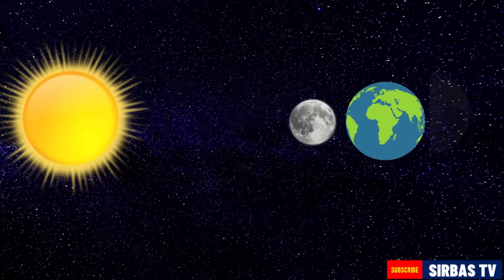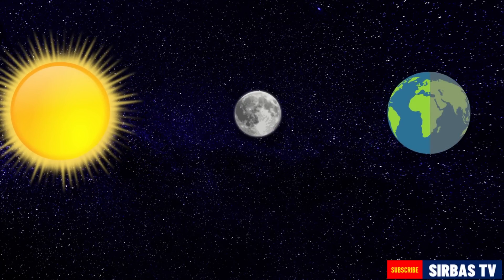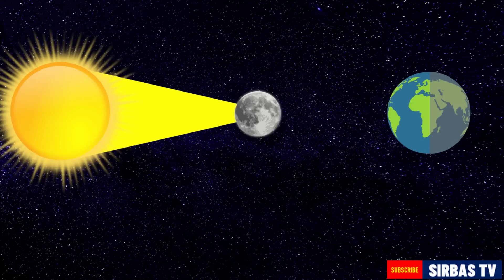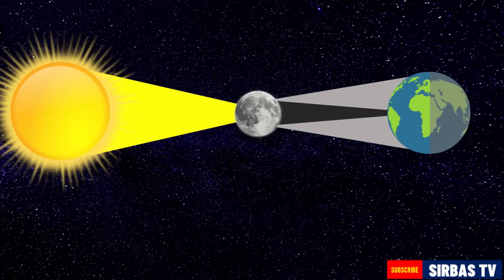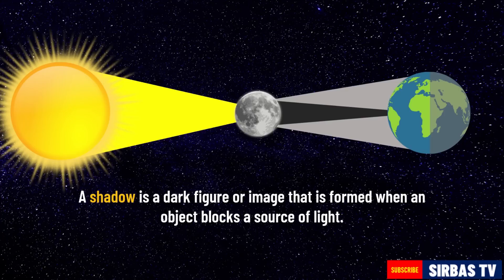For example, when the Moon comes between the Sun and Earth, the Moon blocks the Sun. Hence, people on Earth will not see the Sun for a period of time. As you can see, the Moon also forms a shadow on the surface of the Earth as it blocks the Sun. A shadow is a dark figure or image that is formed when an object blocks a source of light.